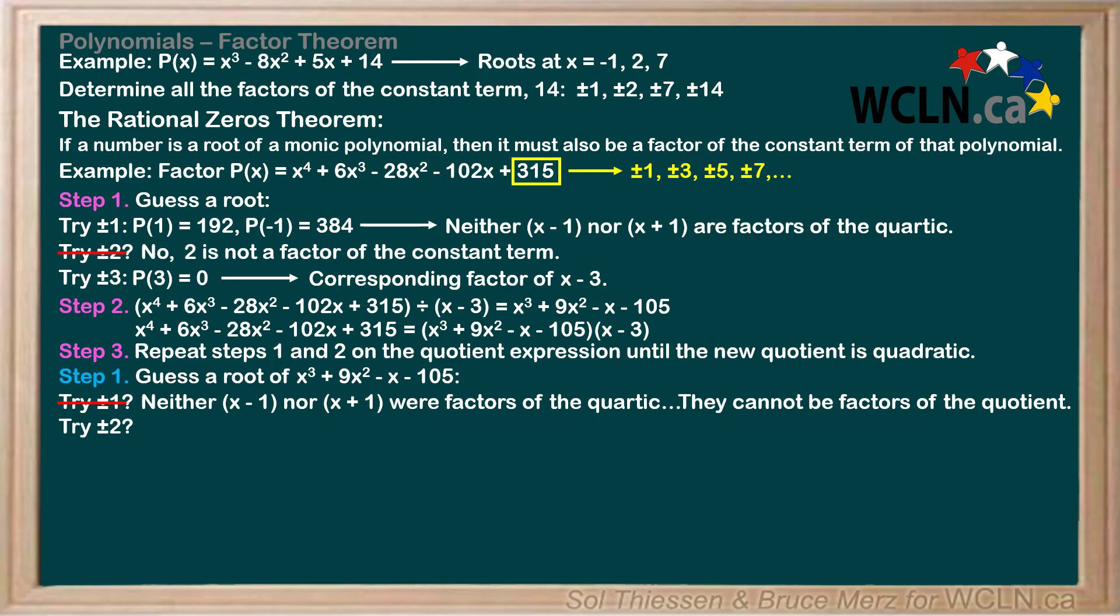Should we try 2 or negative 2? Again, no, for the same reason we didn't do 1 or negative 1, but also because 2 is not a factor of the new constant term, negative 105. Now we ask, do we try 3 and negative 3? 3 is a factor of negative 105, but since we already tried positive 3 on the original quartic and it was a root, should we bother to try it again on the quotient cubic or just move on to negative 3?